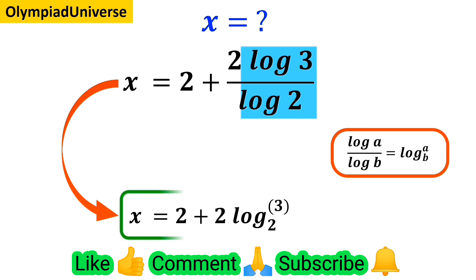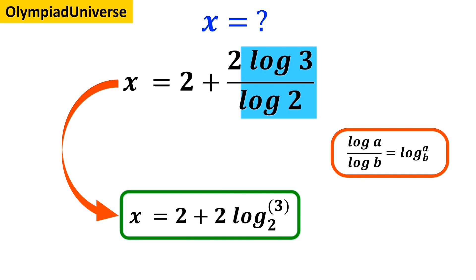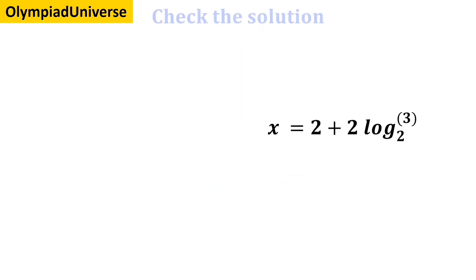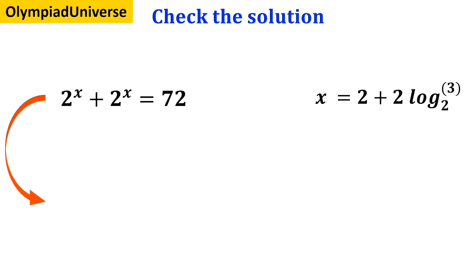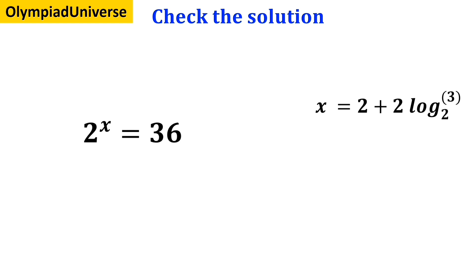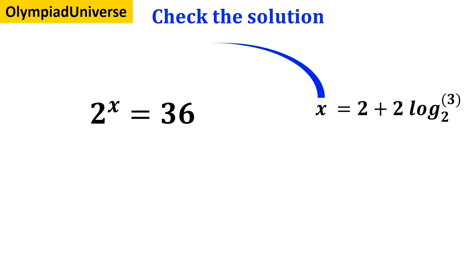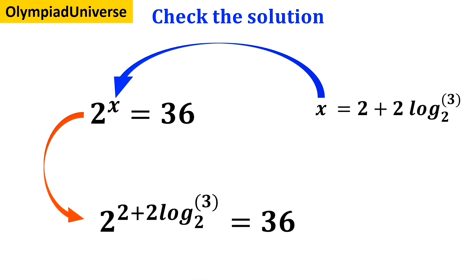And this is the simplest possible solution for x. Now let's check whether the value we found for x is actually correct. If we remember, the original equation after simplification was 2 to the power of x is equal to 36. Now we substitute the value of x back into the equation, so it becomes 2 to the power of (2 plus 2 times log of 3 with base 2) which is equal to 36.